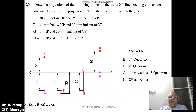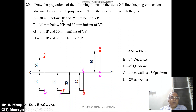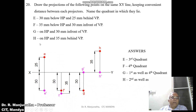Draw the projections of the following points on the same XY line, keeping a convenient distance between each projector. Name the quadrants in which they lie. Point E is 30mm below HP and 25mm behind VP. Point F is 35mm below HP and 30mm in front of VP. Point G is on HP and 30mm in front of VP. Point H is on HP and 35mm behind VP.